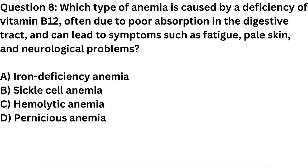Question 8. Which type of anemia is caused by a deficiency of vitamin B12, often due to poor absorption in the digestive tract, and can lead to symptoms such as fatigue, pale skin, and neurological problems? A. Iron deficiency anemia. B. Sickle cell anemia. C. Hemolytic anemia. D. Pernicious anemia.